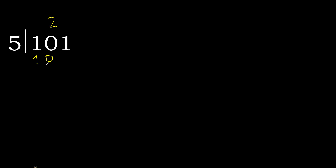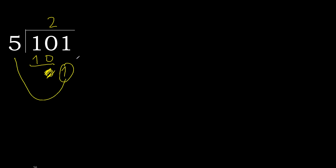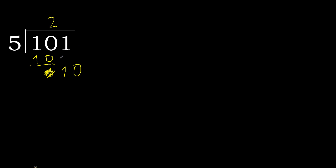OK, subtract: 10 minus 10 is 0. Next, bring down: 0, then 1. 1 is less, therefore next — there is no number. Therefore, complete — always complete with 0.